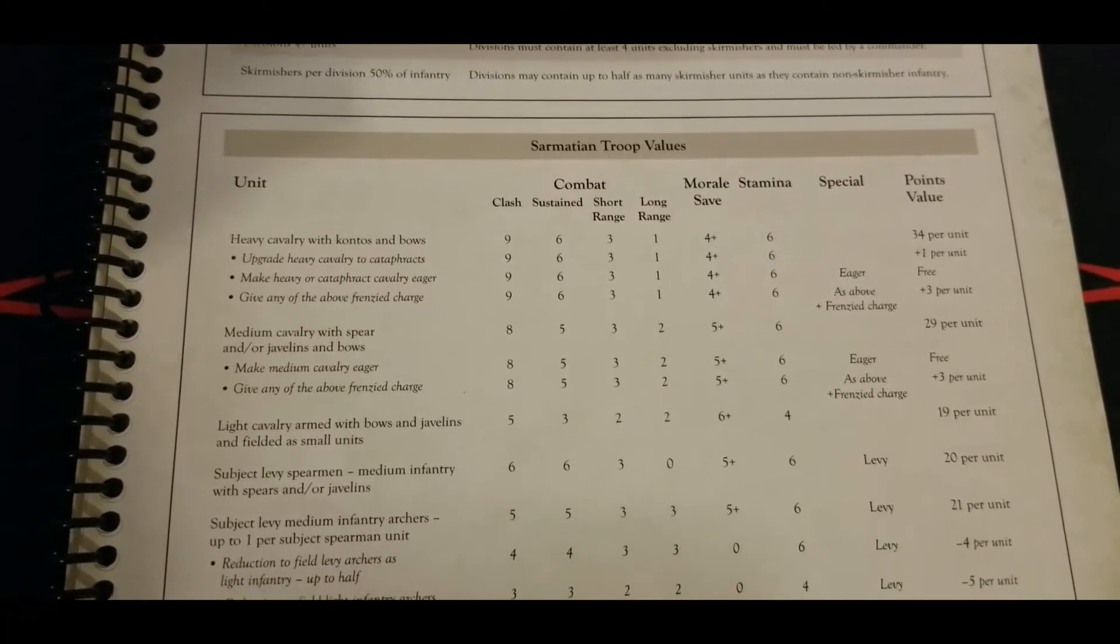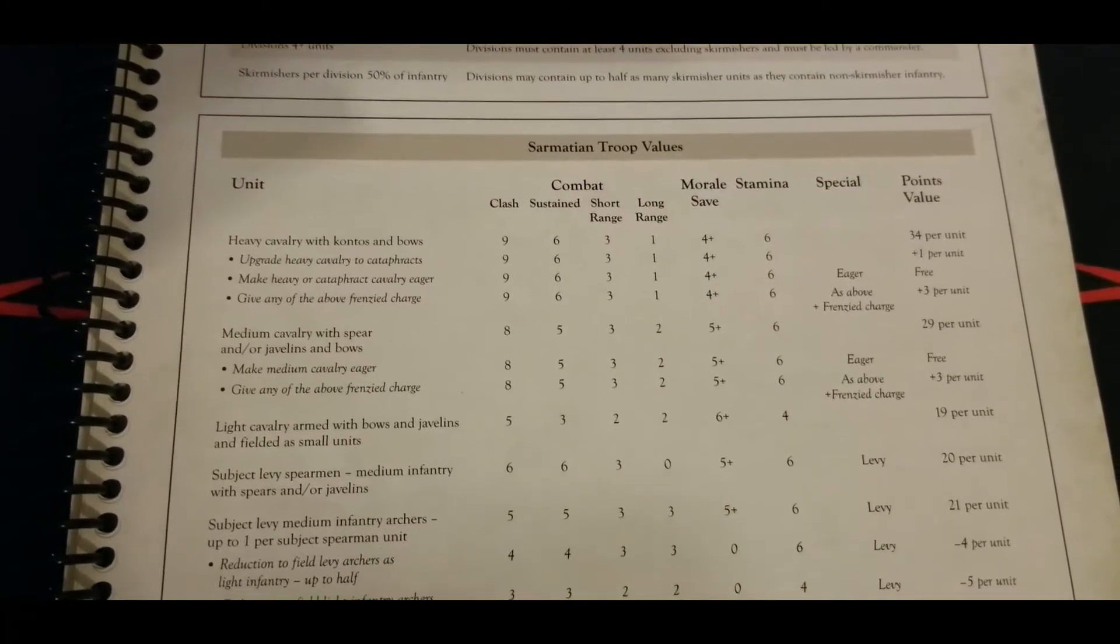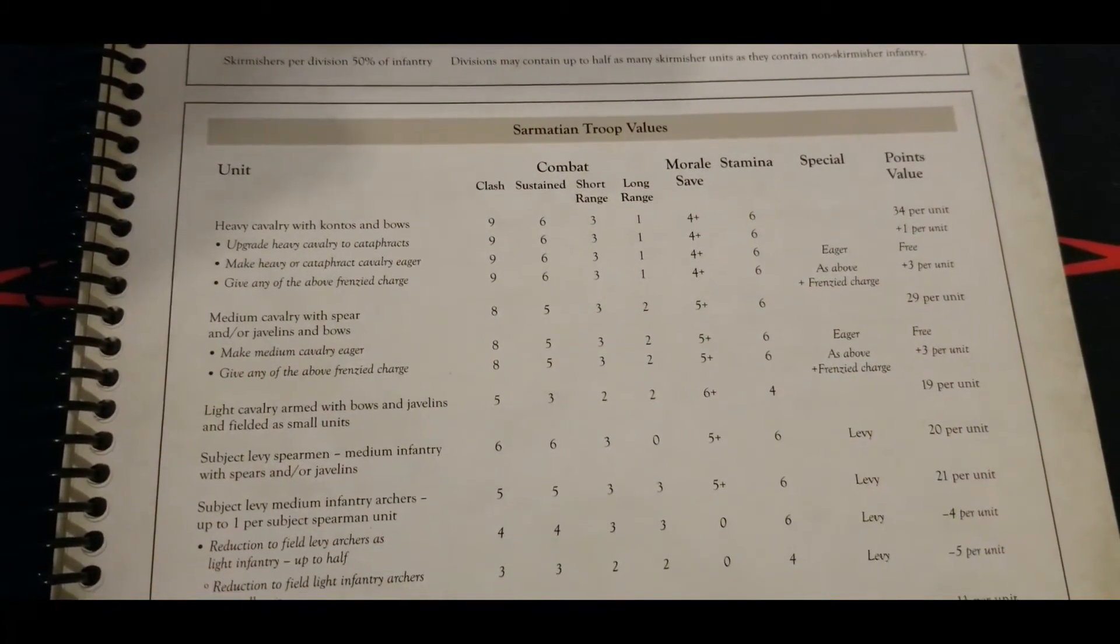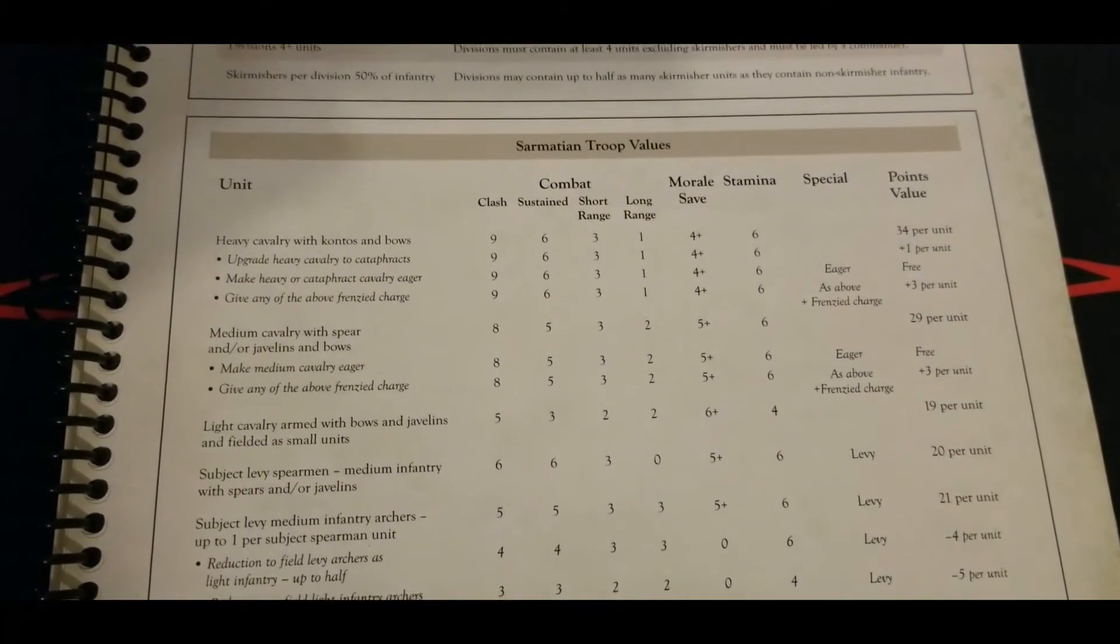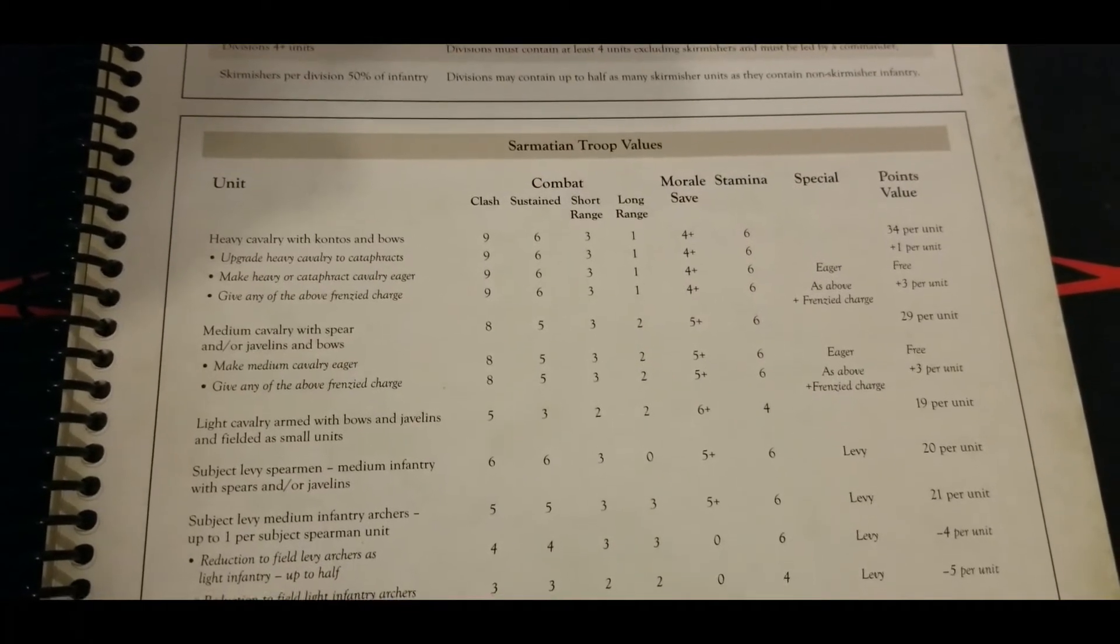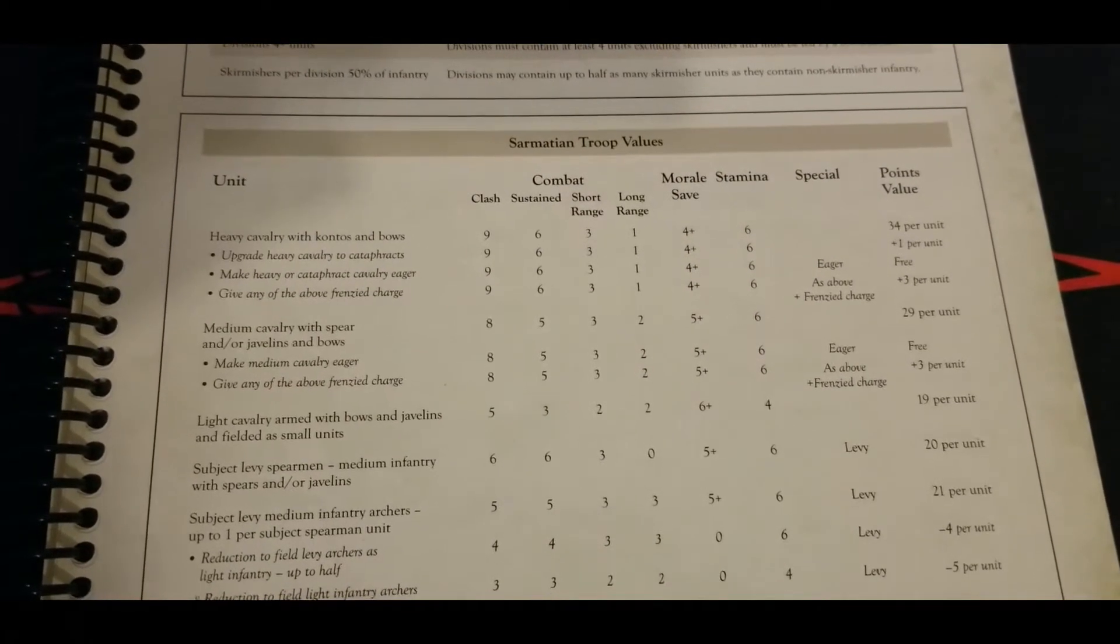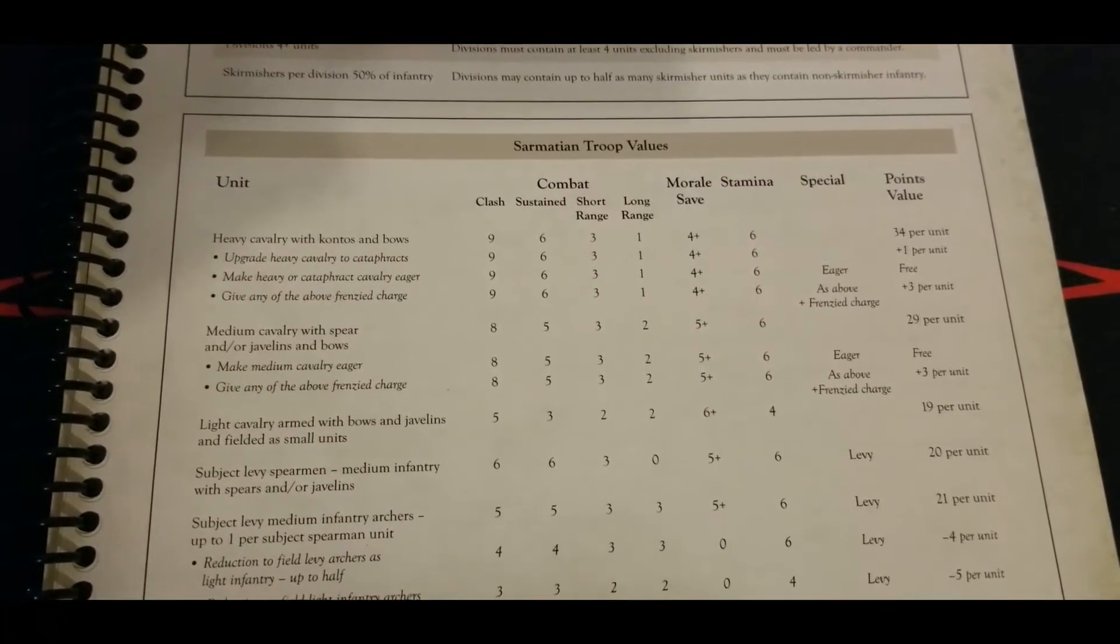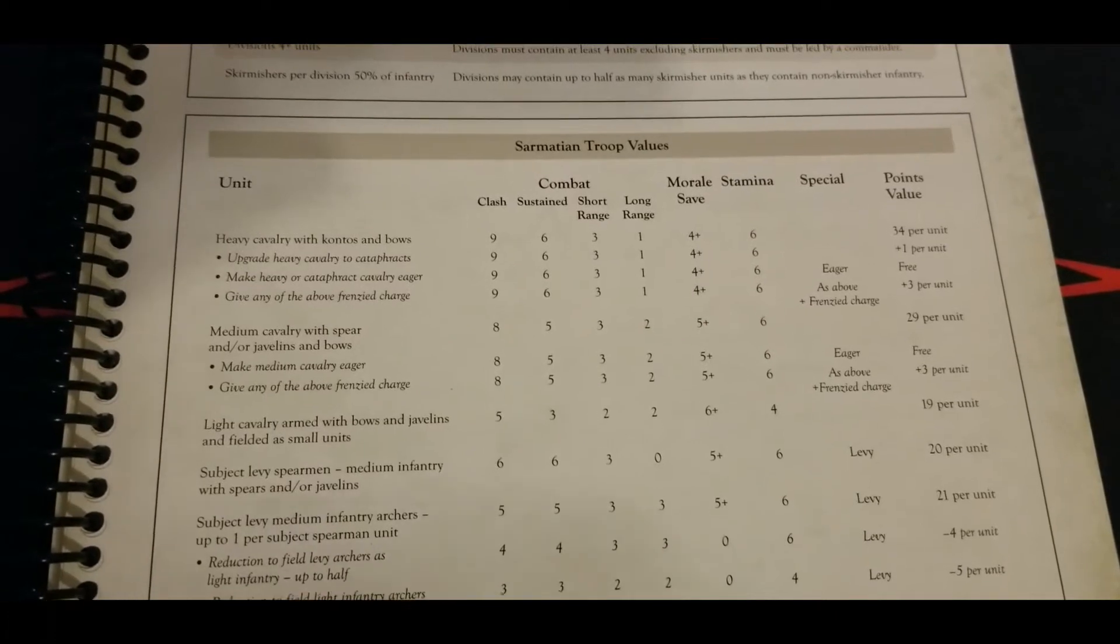Clash of nine drops to six, pretty typical. You get that heavy cavalry morale save and excellent short and long range ability, although long range is just a one. 34 points a pop.